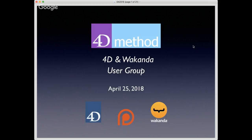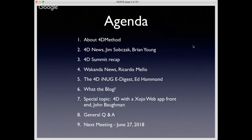Hi everyone and welcome to another 4D Method user group meeting. This is the 4D in Wakanda user group. Today's date is April 25th, 2018. On our agenda today we'll discuss the 4D method, get 4D news from Jim Sobchek and Brian Young, have a 4D summit recap from Washington DC and Paris, get news from Wakanda from Ricardo Melo, the 4D iNug eDigest from Edgar Hammond, a segment called 'What the Blog,' and a special topic: 4D with a Zojo web app front end by John Bachman. We'll have Q&A and discuss the next meeting on June 27th.